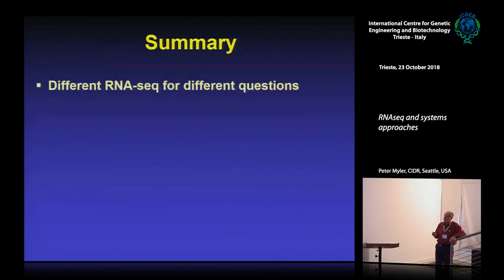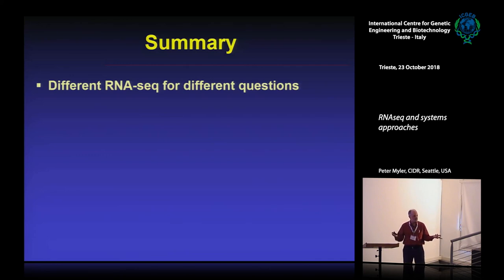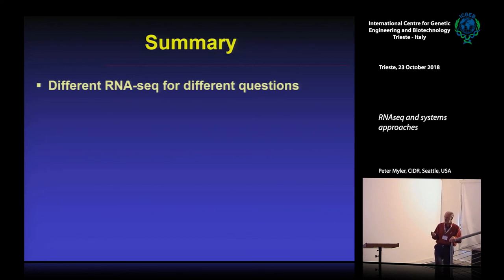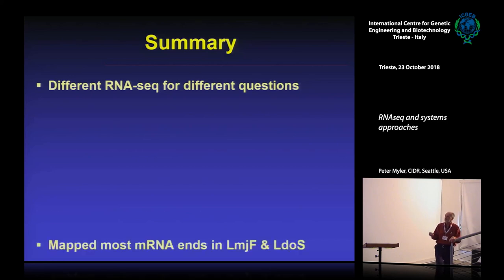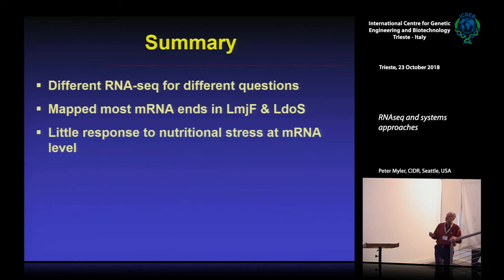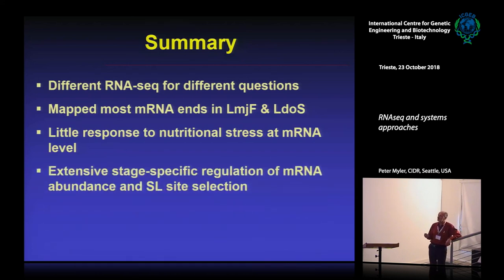In summary, you need to make different RNA-seq libraries to answer different questions: a total RNA library for RNA abundance, a splice leader RNA library for a slightly different question, and ribosome profiling libraries for the full picture. There's little response to nutritional stress at the RNA level in trypanosomatids, but there's extensive stage-specific regulation of RNA levels and splice leader selection. Most importantly, there's a lot of translational control that you'll miss if you just rely on RNA-seq.